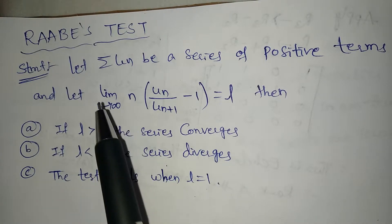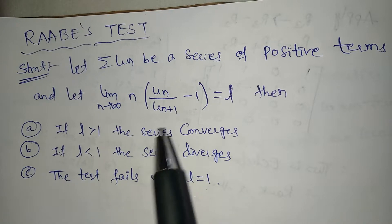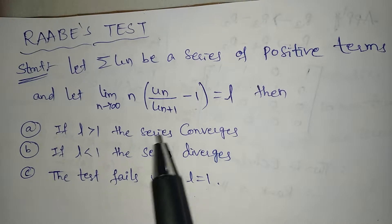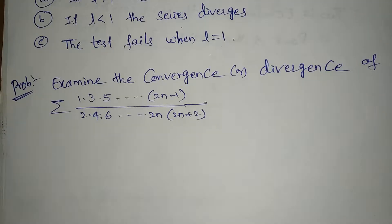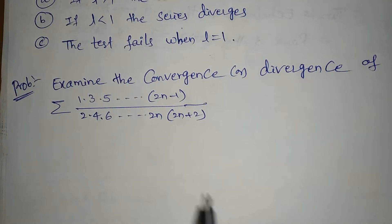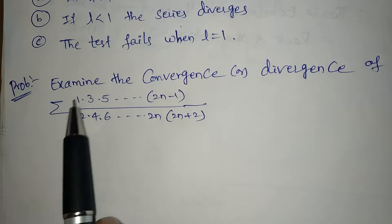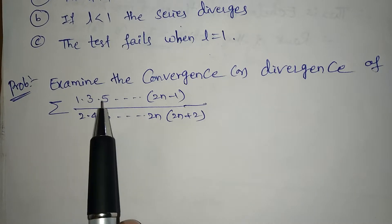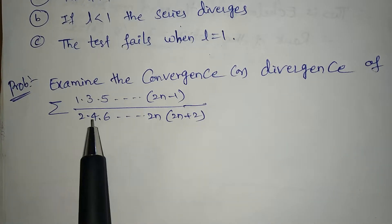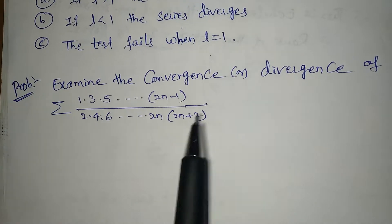We are applying Raabe's test. Now we are going to start the problem. Problem: Examine the convergence or divergence of the series: summation of 1·3·5···(2n−1) divided by 2·4·6···(2n)·(2n+2).